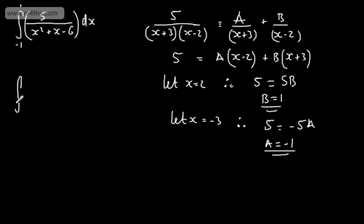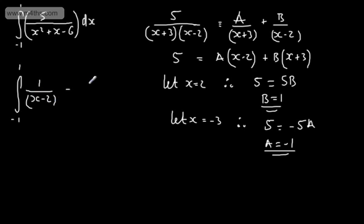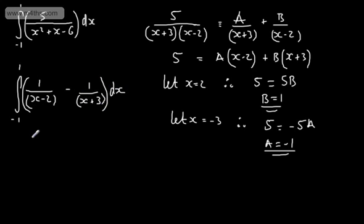So we're looking for the integral from minus 1 to 1 of 1 over (x minus 2) minus 1 over (x plus 3), integrated with respect to x. Splitting it up, we're going to get two expressions using logs.